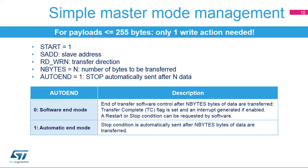End of Transfer Mode is configured by the Auto End Bit. If it is set, the Stop Condition is automatically sent after the programmed number of bytes is transferred. If the Auto End Bit is not set, the End of Transfer is managed by software. After the programmed number of bytes is transferred, the Transfer Complete or TC flag is set, and an interrupt is generated if enabled. Then a repeated start or a stop condition can be requested by software.